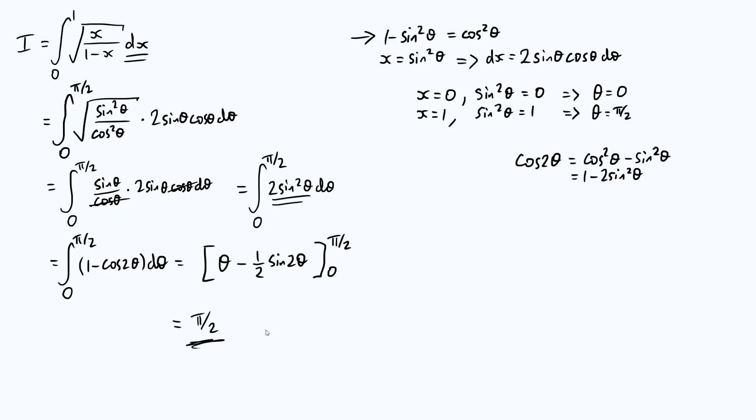So there we go. We've evaluated our integral I. This may be a bit surprising if you think about how this graph actually looks. If you were to sketch y as a function of x, where y equals square root of x over 1 minus x, it turns out, you can see pretty clearly that it has an asymptote, a vertical asymptote, at x equals 1.